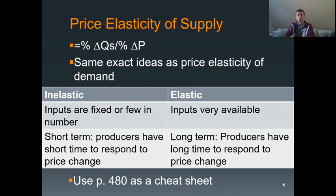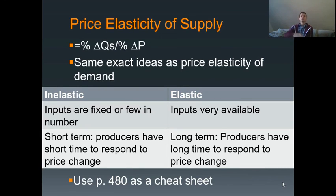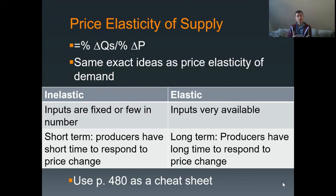If it's elastic — greater than one — then it's the opposite: inputs are very available, and it's very easy for companies to go out and expand their production. Or it's long term, meaning producers have a long time to respond to change. That's something that's big in elasticity in general: if you have a long time to respond to a change, it tends to be more elastic. This makes sense for price elasticity of demand as well — if you have more time, the good is more elastic.